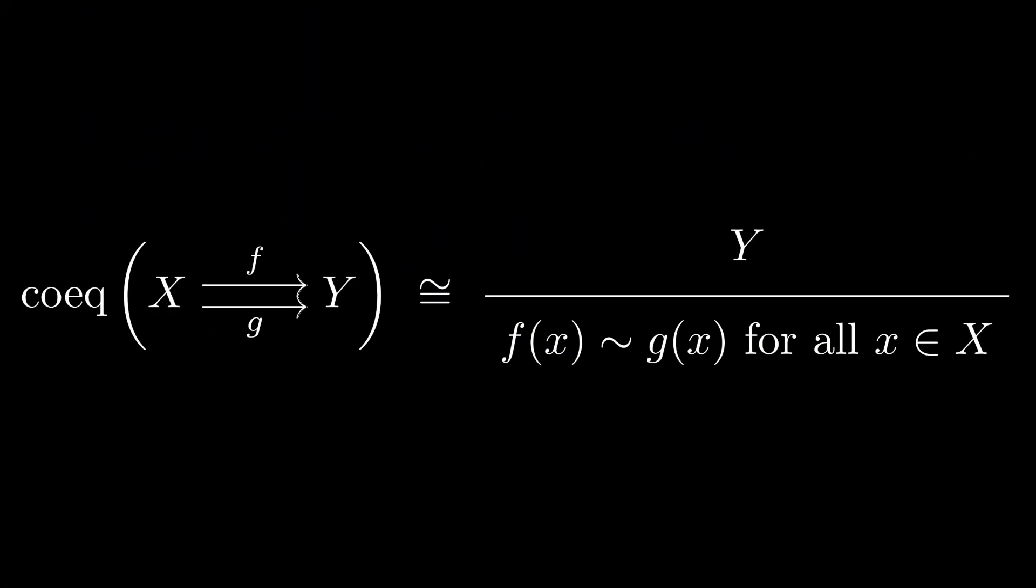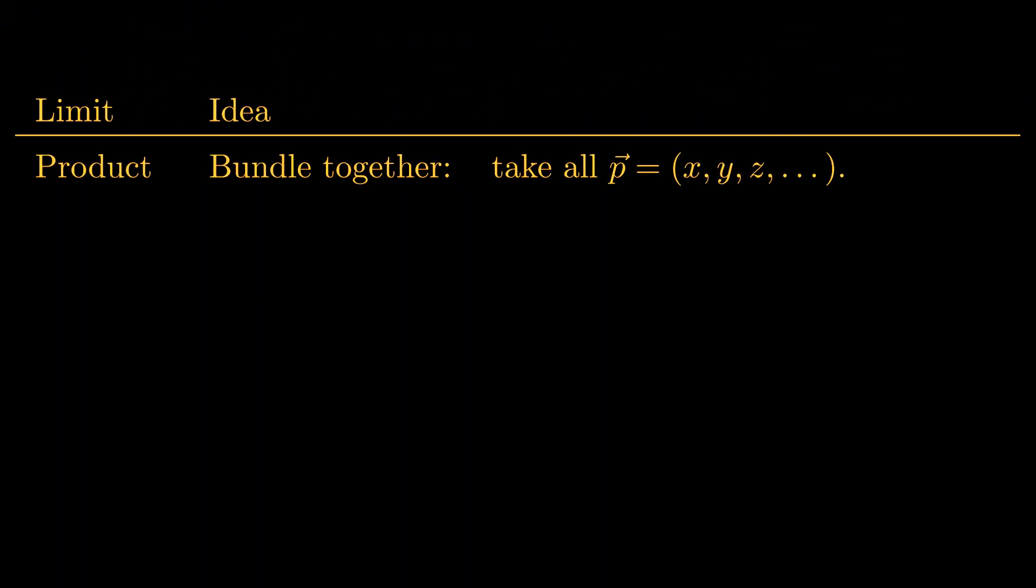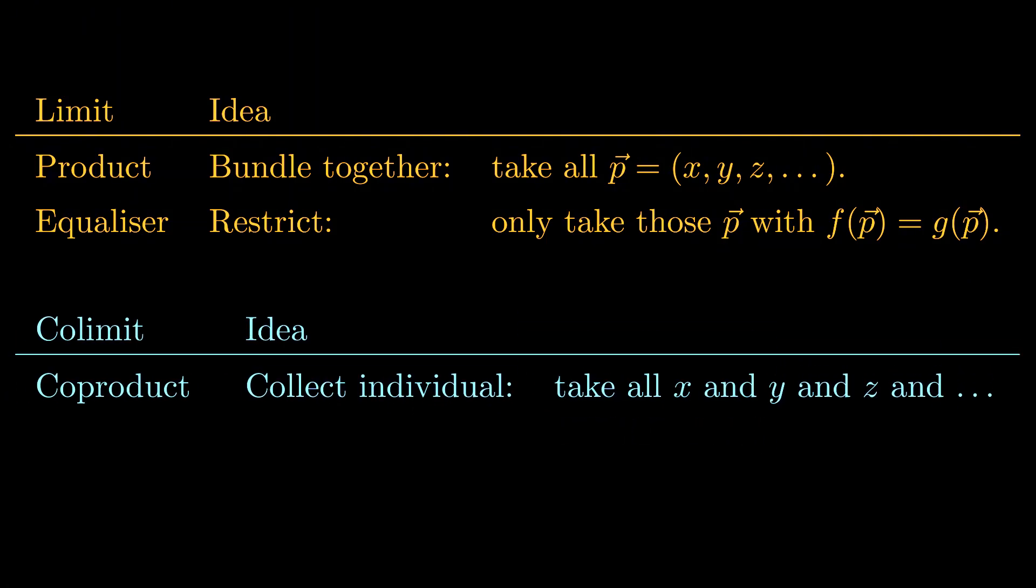Overall, we see that the coequalizer of two maps into a set y is given by taking the set y and coercing that f of x is equal to g of x for every x. Now that we have an understanding of how coproducts and coequalizers work, we get a good overall picture of colimits of sets. In the world of limits, products serve to build up sets by bundling together a bunch of elements, and equalizers serve to filter the set out according to equations. In the dual world of colimits, coproducts serve to build up sets by collecting a bunch of individual elements, and coequalizers serve to refine a set by folding and gluing elements together according to equations.